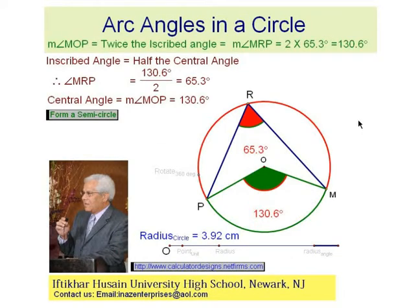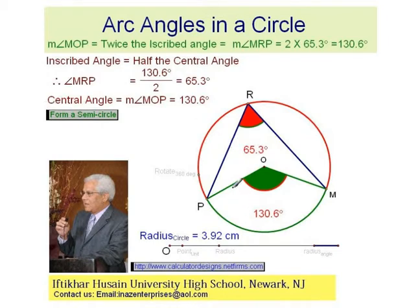The visual demonstration will show you that the measure of the central angle is equal to twice the measure of its inscribed angle. This central angle, which is right now 130.6 degrees, is twice the value of its inscribed angle, which is this one.